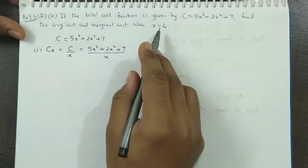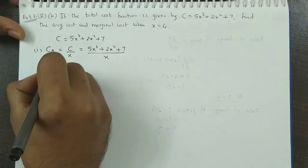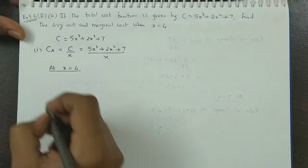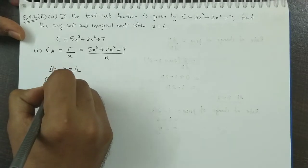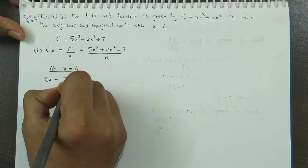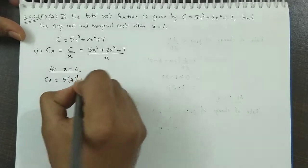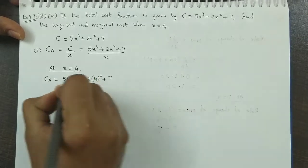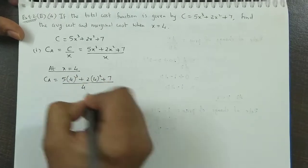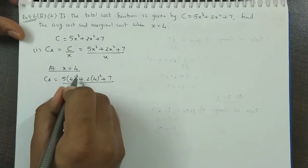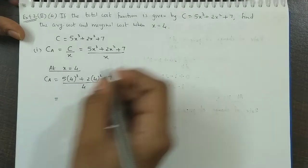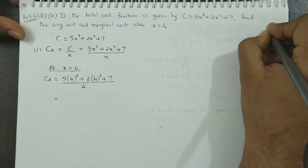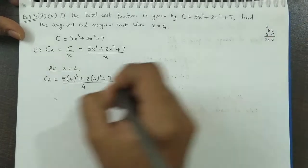Now I have asked average cost when x = 4. So we substitute x to 4. So at x = 4, average cost will be 5 into 4 cube plus 2 into 4 square plus 7 divided by 4. 4 cube is 64. Now 64 into 5, this becomes 20. So this is 320.